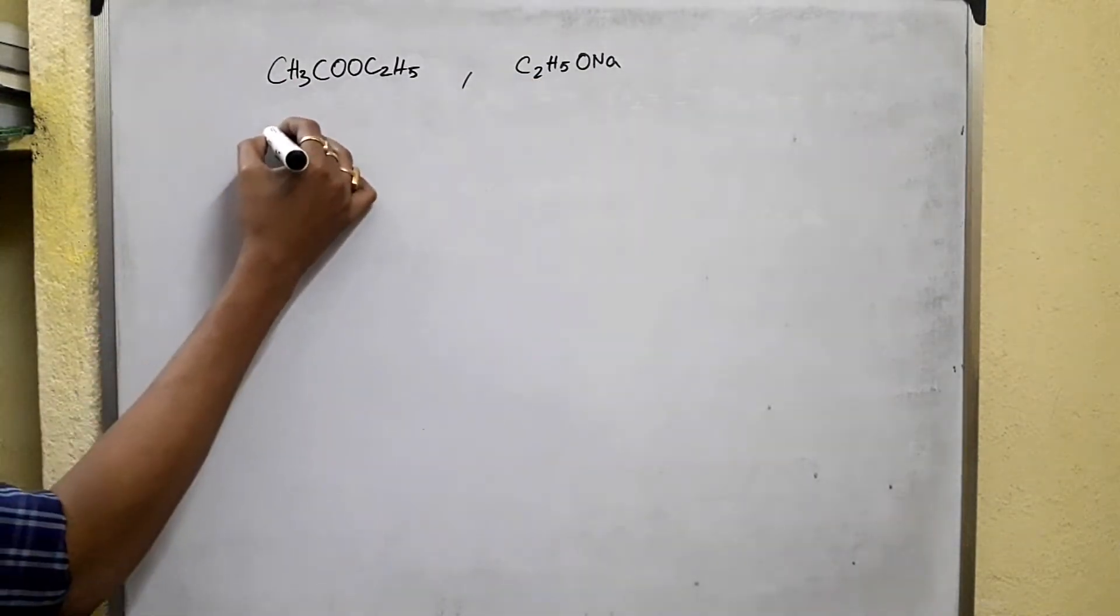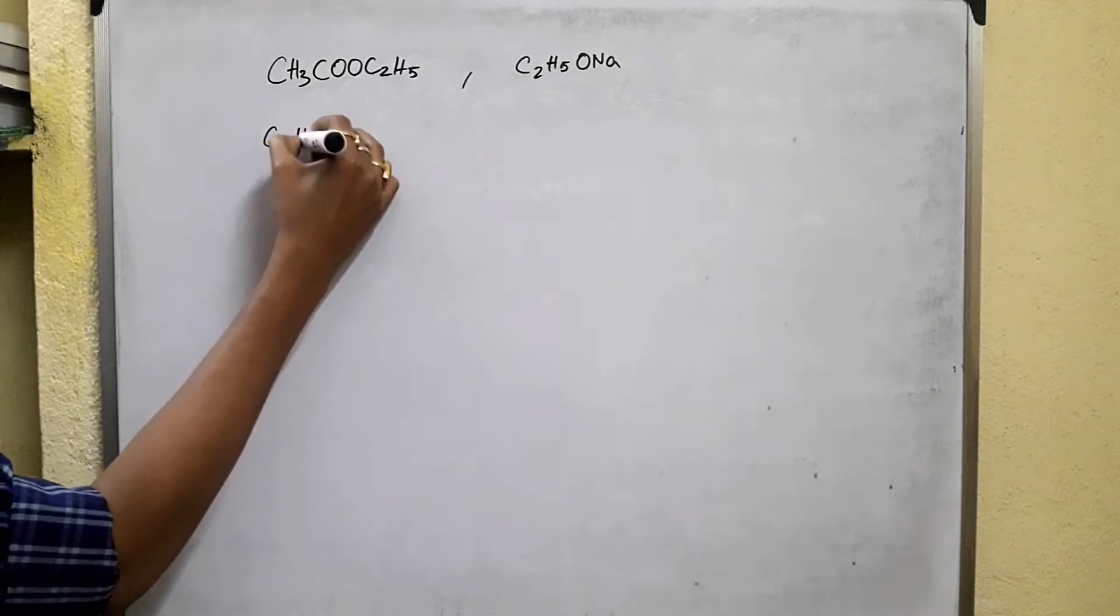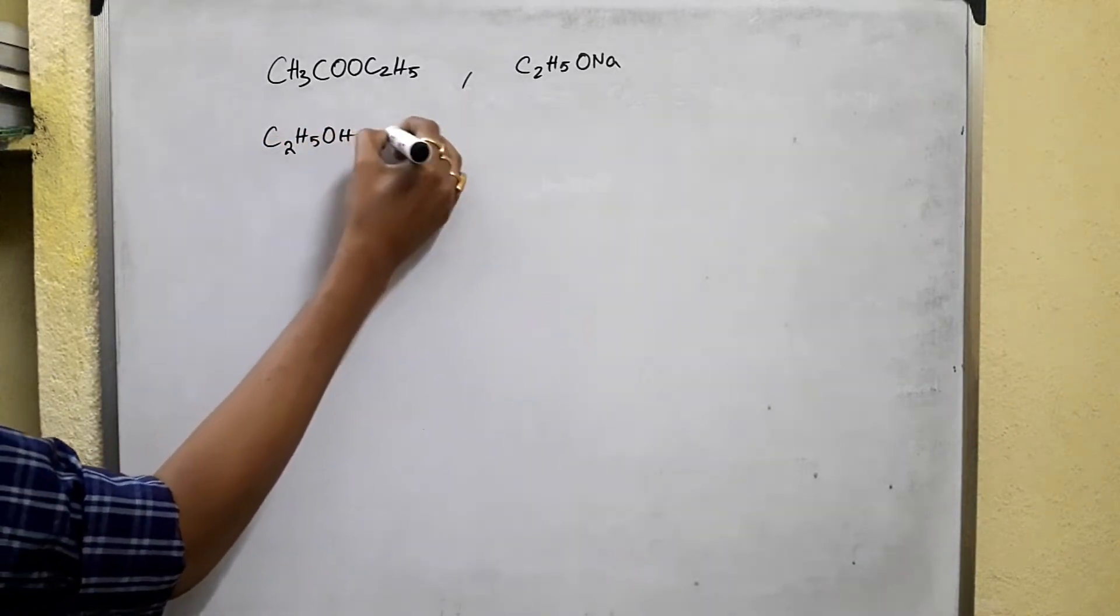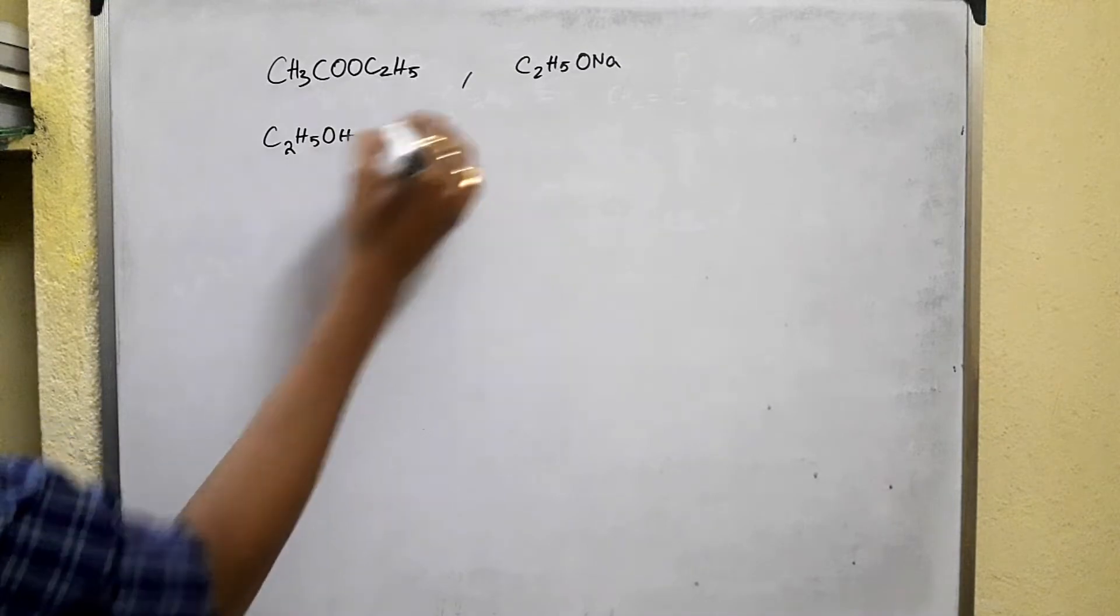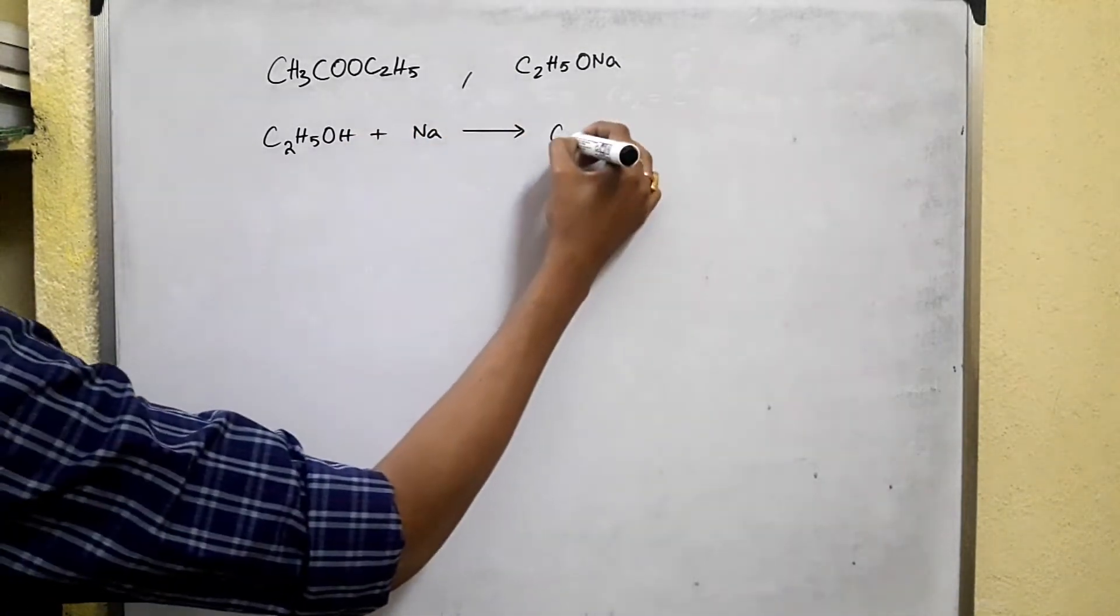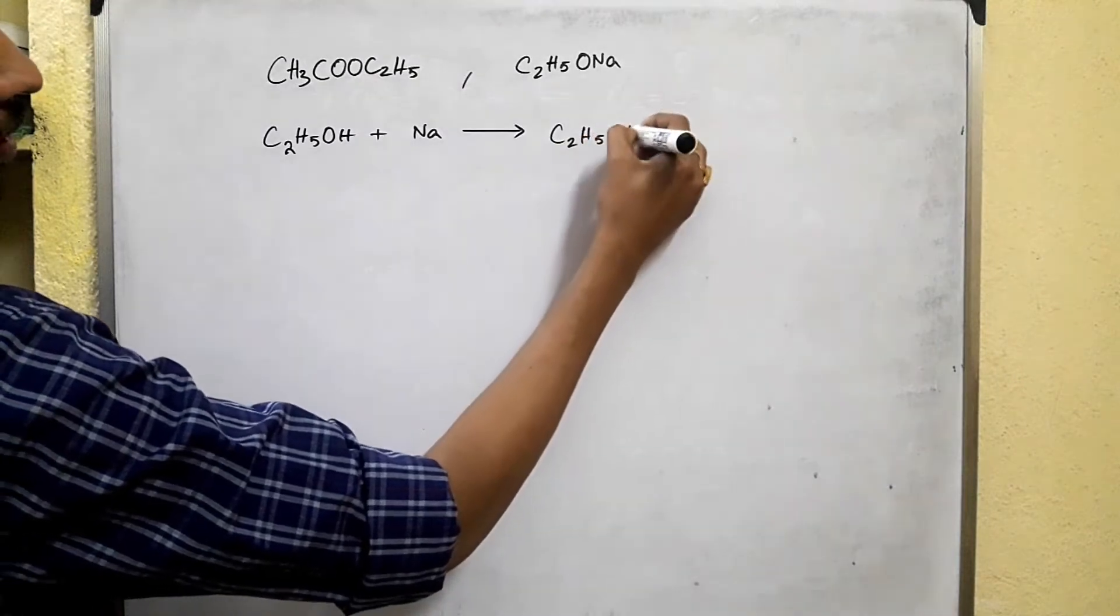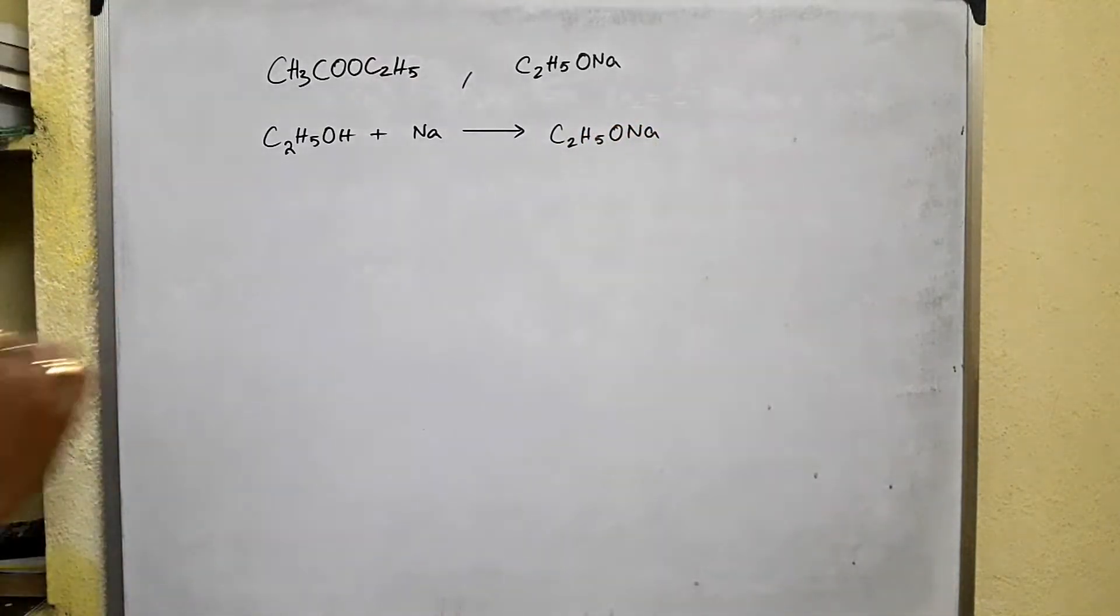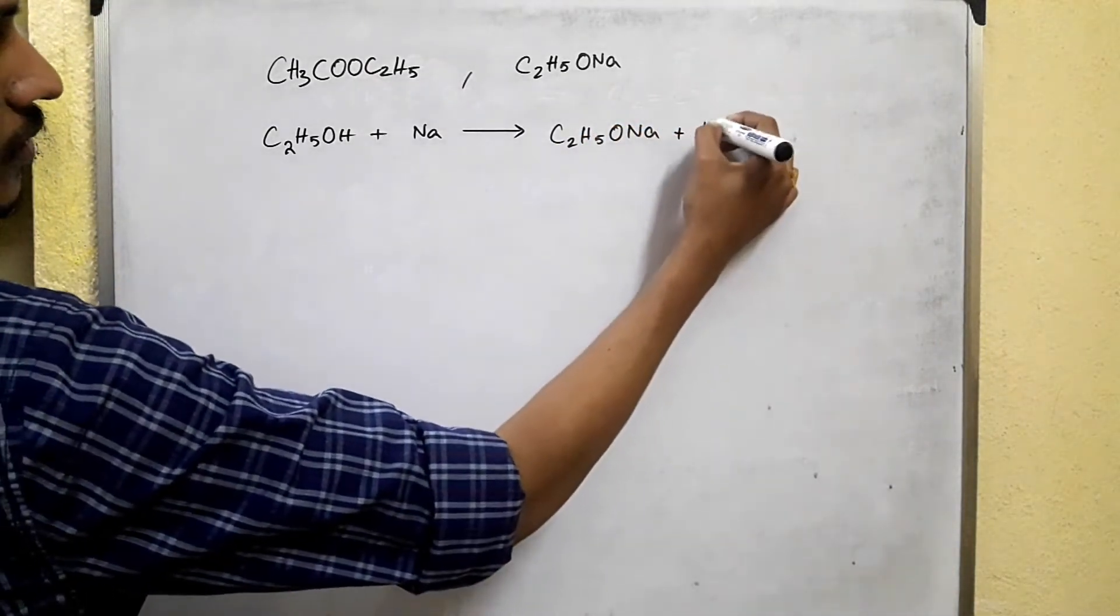To prepare sodium ethoxide, ethyl alcohol is treated with alkali metal sodium plus hydrogen. And if you balance the reaction, this is what you get.